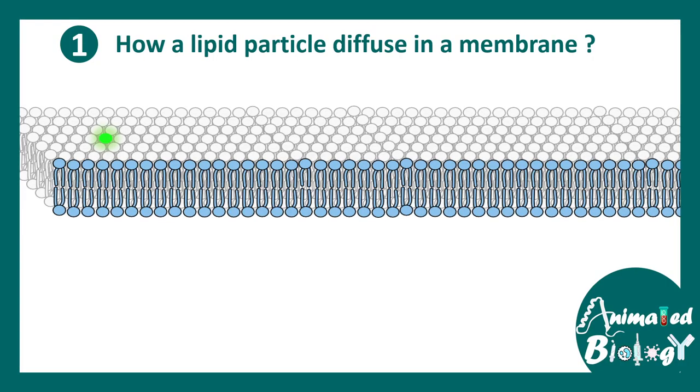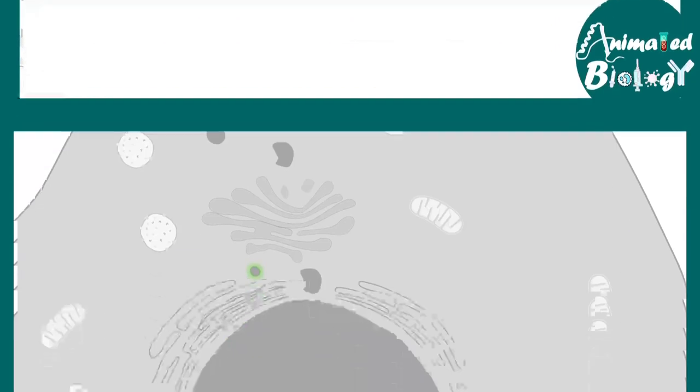Let's say we want to understand the diffusion of a lipid particle through the lipid bilayer. This can be achieved using FCS measurements. Obviously, the particular lipid that is to be probed has to be labeled by any kind of fluorescence dye.